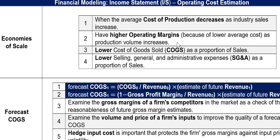For non-manufacturing firms, the same idea applies but instead of production cost, we look at the cost of goods sold. As sales increase and revenue increases, economy of scale exists when the average cost of goods sold is lower. This is the same concept as marginal cost and marginal revenue but extended to average cost of goods sold. Cost of goods sold can also reflect inventory costs for companies that resell products, but some service companies do not have inventory.